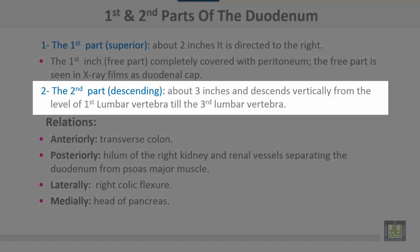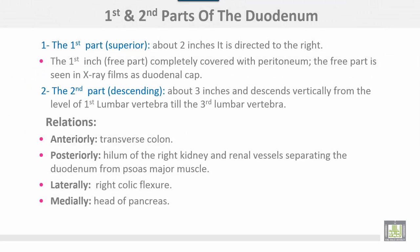The second part, descending about three inches, descends vertically from the level of the first lumbar vertebra to the third lumbar vertebra. Relations of the first part: anteriorly the transverse colon, posteriorly the hilum of the right kidney and renal vessels, laterally the right colic flexure, and medially the head of the pancreas.